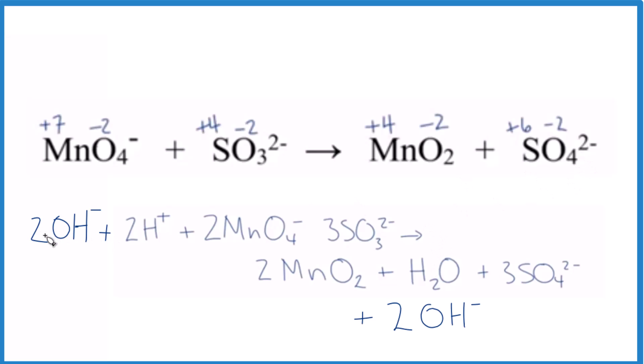Now the hydroxide ions and the hydrogen ion, we have a base and an acid. They neutralize, and they're going to give us 2HOH. And HOH, that's just H2O. So let's replace this here with our 2H2O.